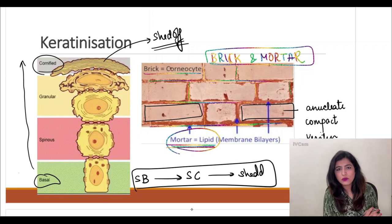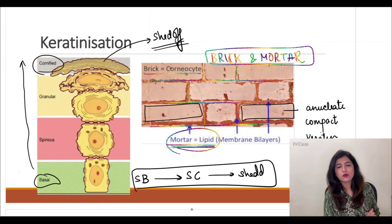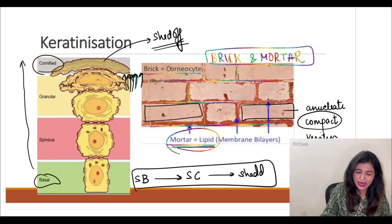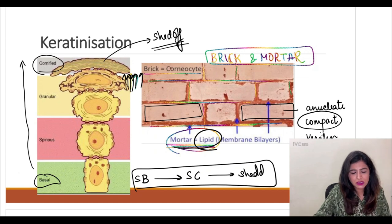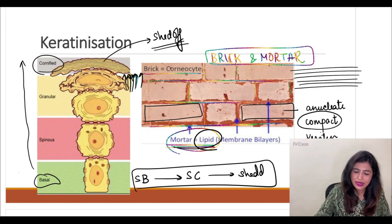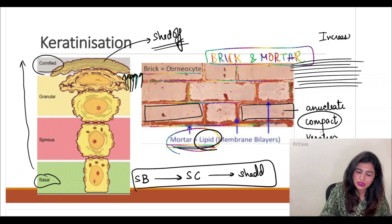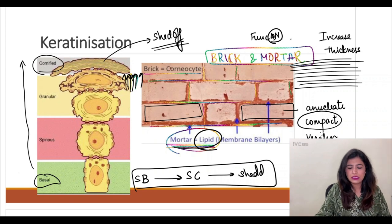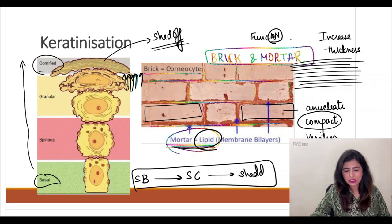If anything goes wrong with keratinization, the stratum corneum will not be functionally proper, leading to ichthyosis. In ichthyosis, cells keep adding to the stratum corneum but either there is a problem in their compactness, their integrity, or with the lipid. So even though they keep adding, they are not functionally normal, resulting in increased thickness of the stratum corneum that is functionally abnormal.